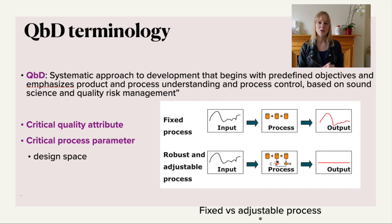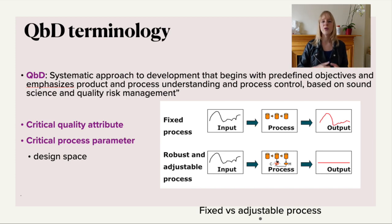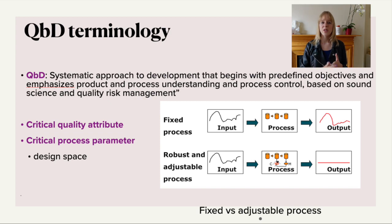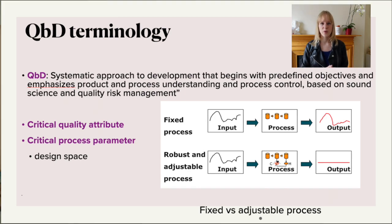Therefore there are two terms that you really need to know. You have critical quality attributes, or CQAs — what are the important attributes that contribute towards the quality? And you have critical process parameters, or CPPs. Think of, for instance, the pH or the temperature. You can also look at certain ways of how you separate things — what parameters in your process define the final quality of the product?